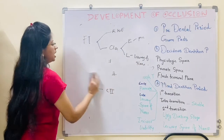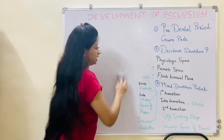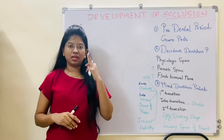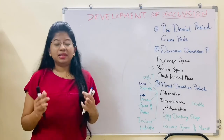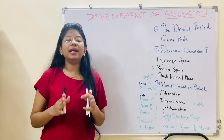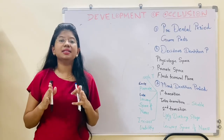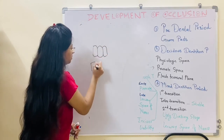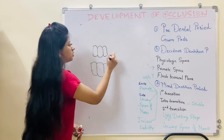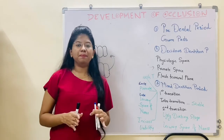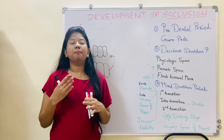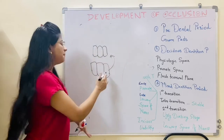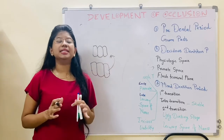Now we will see about incisor liability. The deciduous incisors are smaller than the permanent teeth replacing them, so the permanent incisors require more space. The extra space needed to accommodate the permanent incisors is called incisor liability. This space can be compensated by growth of the intercanine width, utilization of physiological spaces, and further growth of the mandible to accommodate the larger permanent teeth.